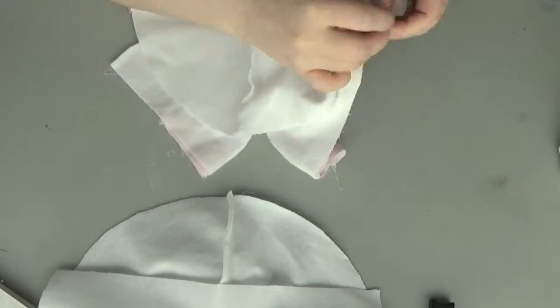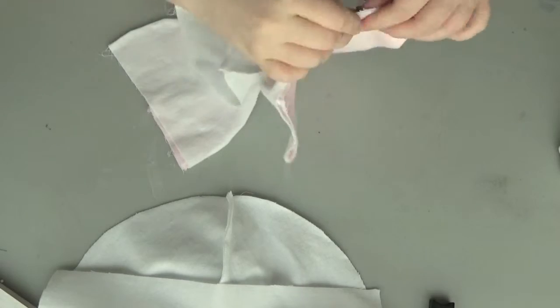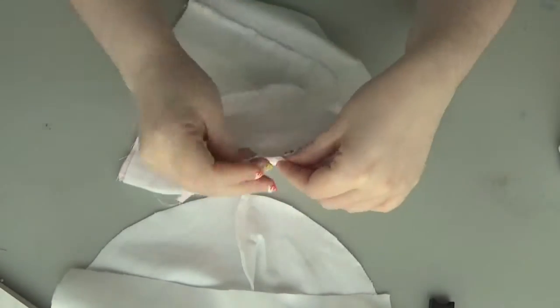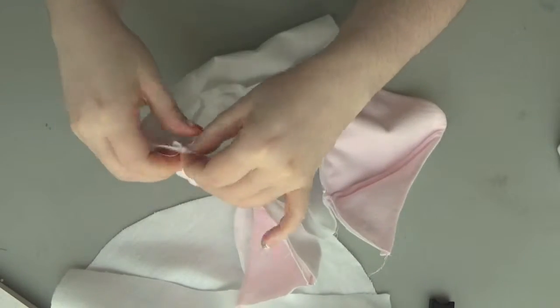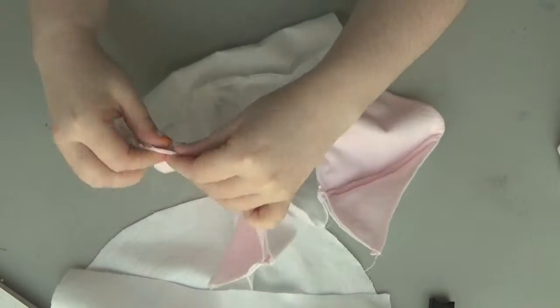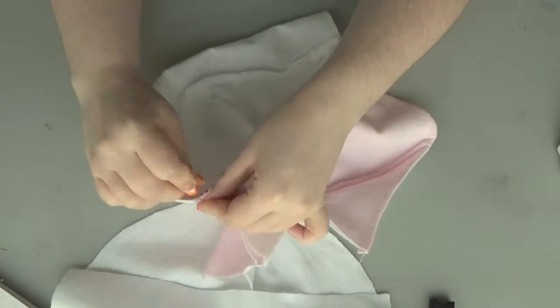Now take the ears, and starting at the bottom where the headband and the cap join parts, start pinning the ears up, curving the ears as you go along to match the top of the cap, being sure to not pin the flap, leave that open. Then sew with a quarter of an inch seam allowance.